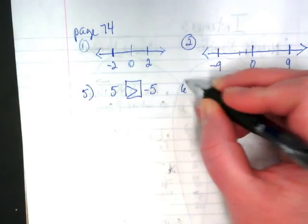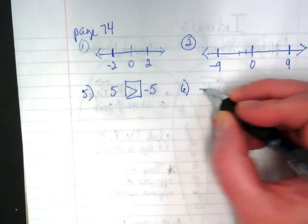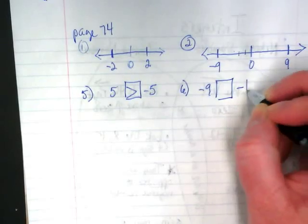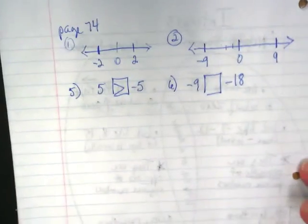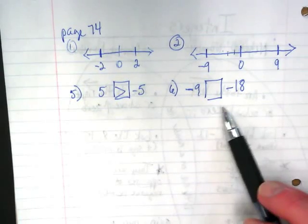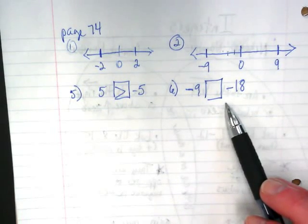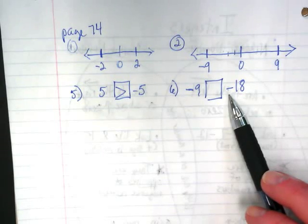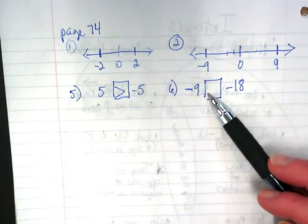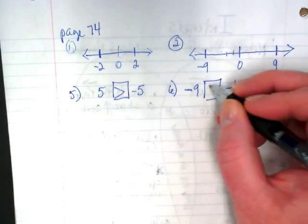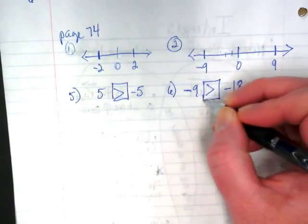If you look at number six, it's showing two negative numbers. Negative nine and negative eighteen. When you look at these two, because they're both negatives, we need to think which of these two numbers is further away from zero. If you look at this big number line over here, you can see where negative nine is, and negative eighteen is even further down below. The further away it is from zero on the negative side, the smaller it is.